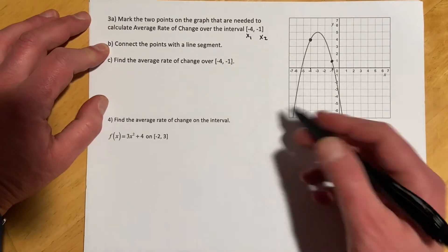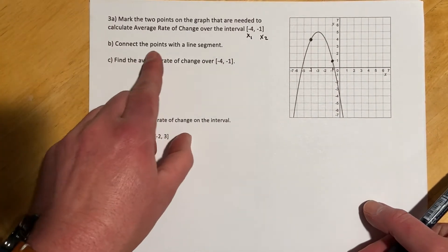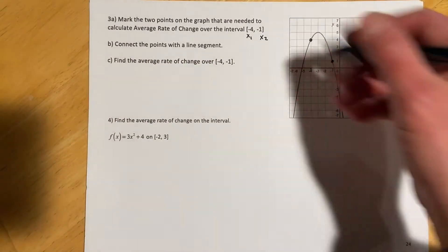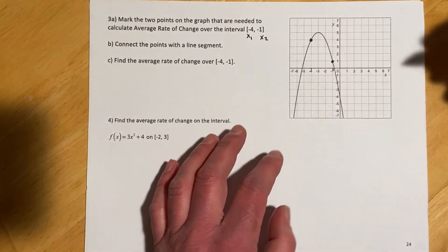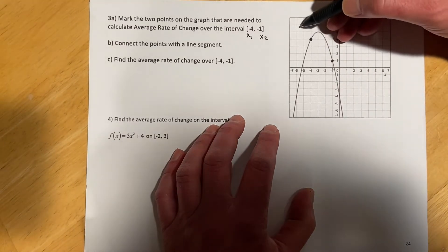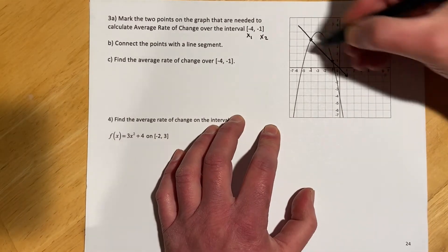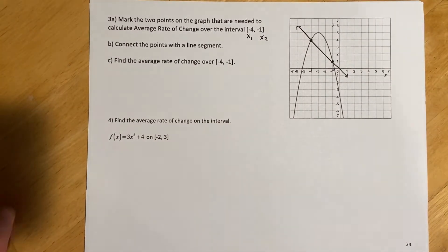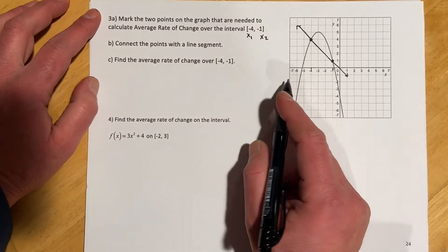Next up we're supposed to connect the points with a line segment. On the homework you're clicking on a graph and it'll let you do this. I'm going to try to draw a straight line but it'll be questionable. Okay, so something like that.